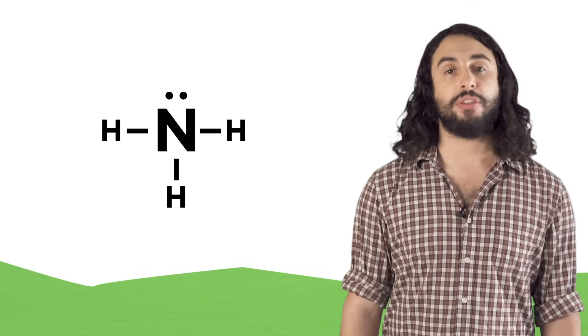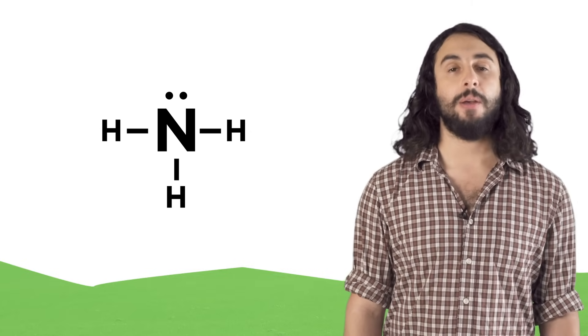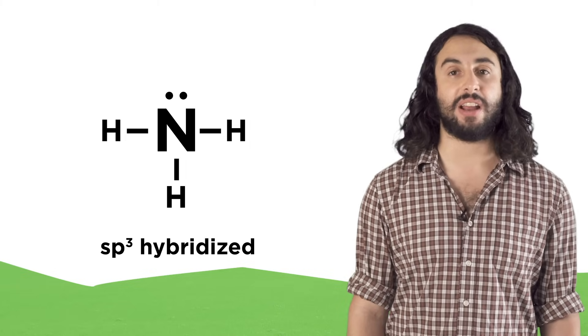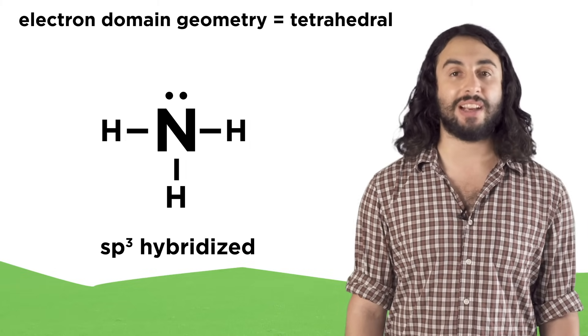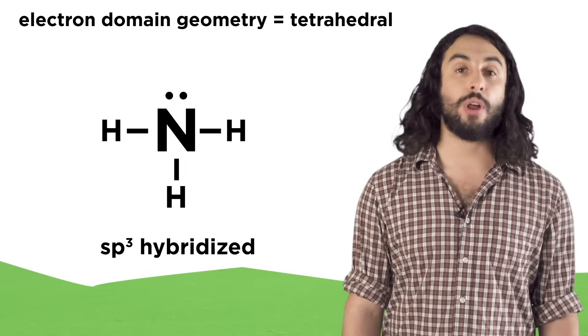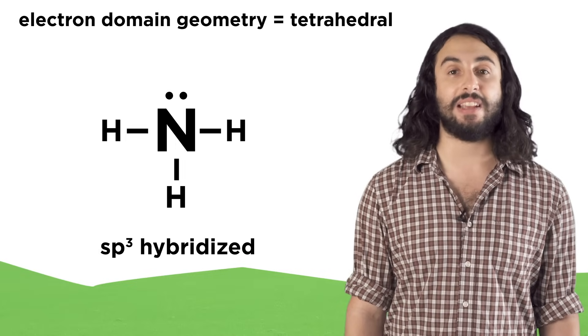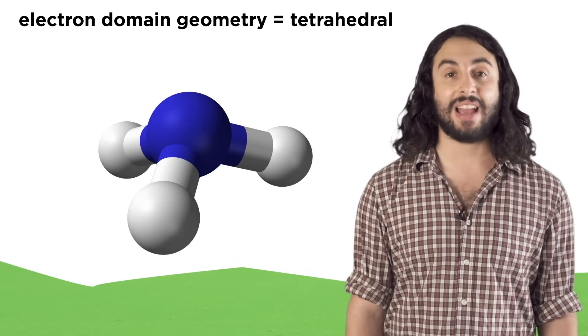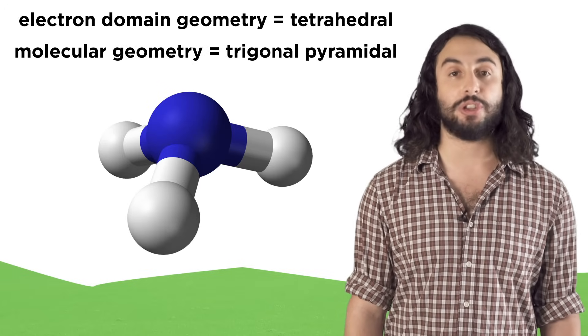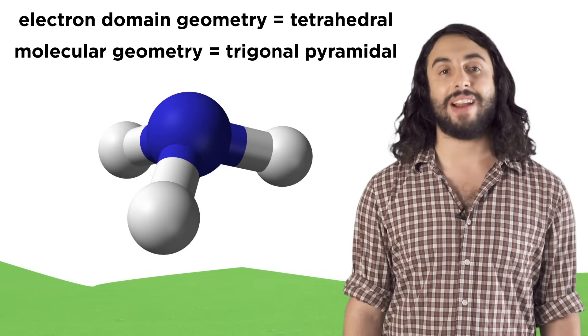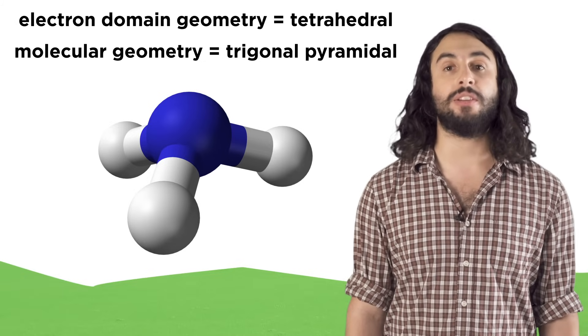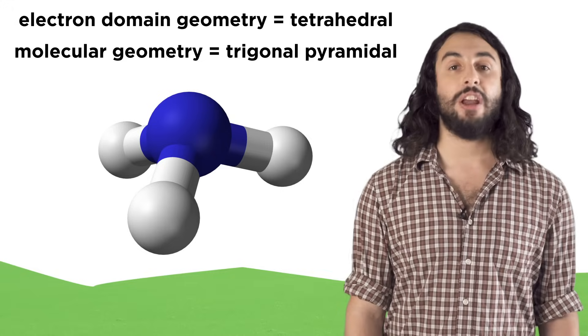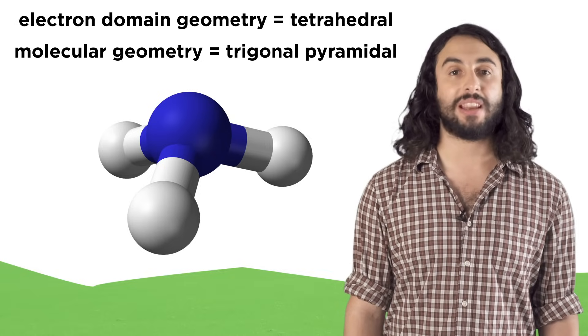Take ammonia, for example. The three hydrogens and one lone pair make nitrogen sp3 hybridized, so it has tetrahedral electron domain geometry. But the lone pair doesn't take up as much space as a bond to another atom, so it has a slightly different shape from methane, and we assign it a different molecular geometry. Molecules that are sp3 hybridized but have one lone pair are said to have trigonal pyramidal molecular geometry.